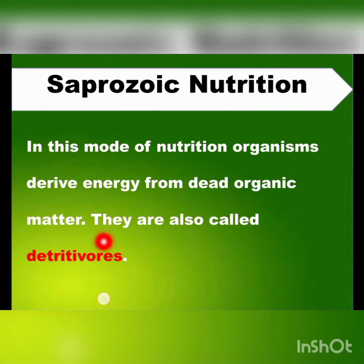Dead organic matter means dead living organisms — the animals that die. These organisms derive energy from that dead material and decompose it.